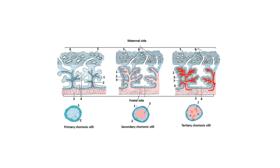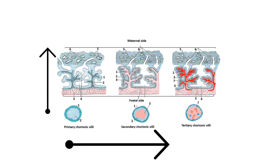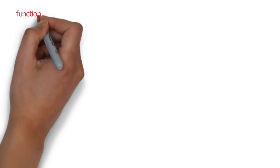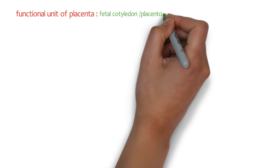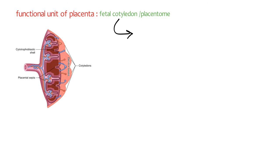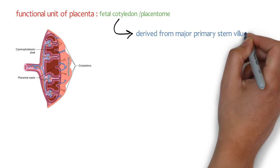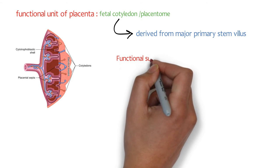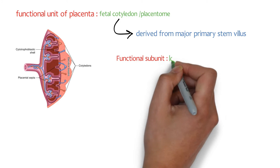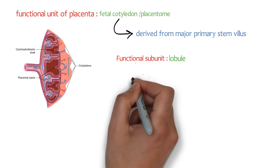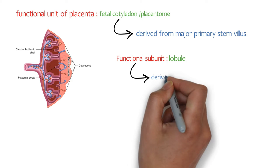This diagram shows the development of the villus. These arise from the chorionic plate and extend to the basal plate. With progressive development, primary, secondary, and tertiary villi are formed. The functional unit of the placenta is called a fetal cotyledon or placentome, which is derived from a major primary stem villus. These major stem villi pass down the intervillous space to anchor onto the basal plate. The functional subunit is called a lobule, derived from a tertiary stem villus.